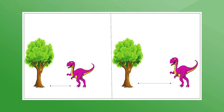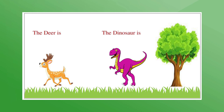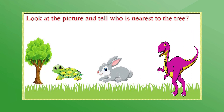Before we move ahead in the story, let's understand what is meant by near and far. This is a dinosaur and this is a tree. The dinosaur is near the tree. Now the dinosaur is moving and going away from the tree, so he is far from the tree. If the deer is here and the dinosaur is here, which animal do you think is near the tree? Yes, it's the dinosaur.